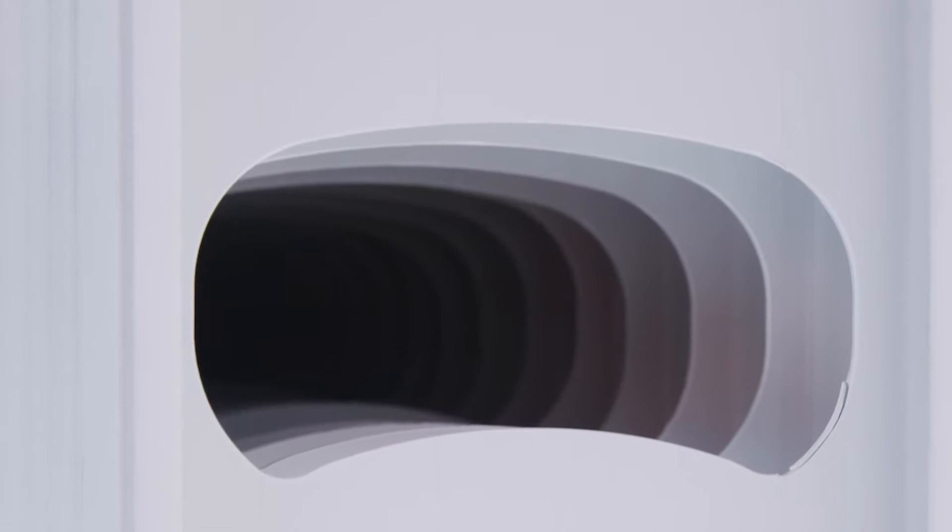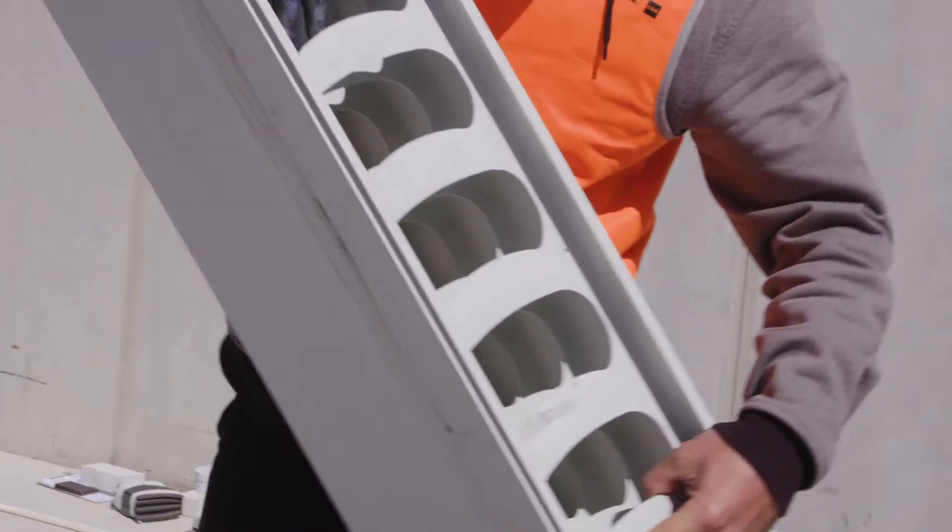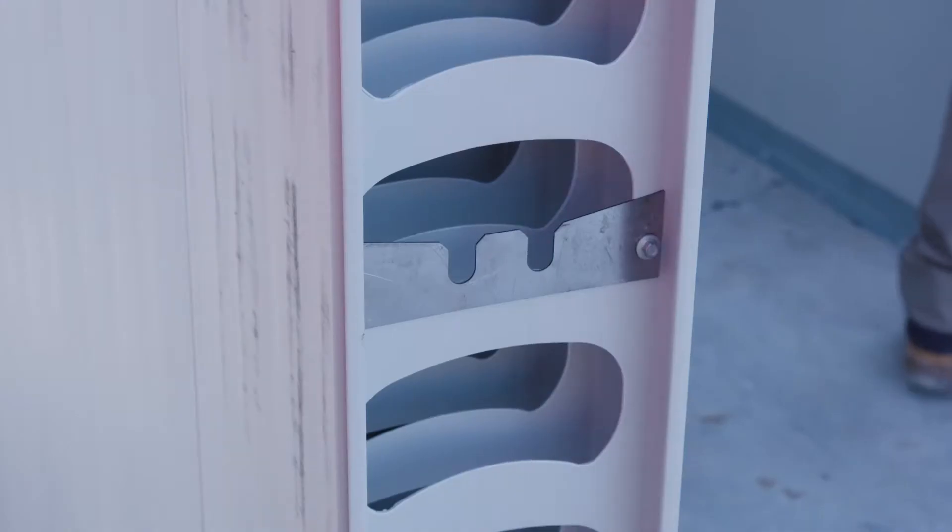When installing the ready wall panels, ensure all web holes are aligned horizontally. Damage to inside webs can result in bulges when wall is core filled with concrete.